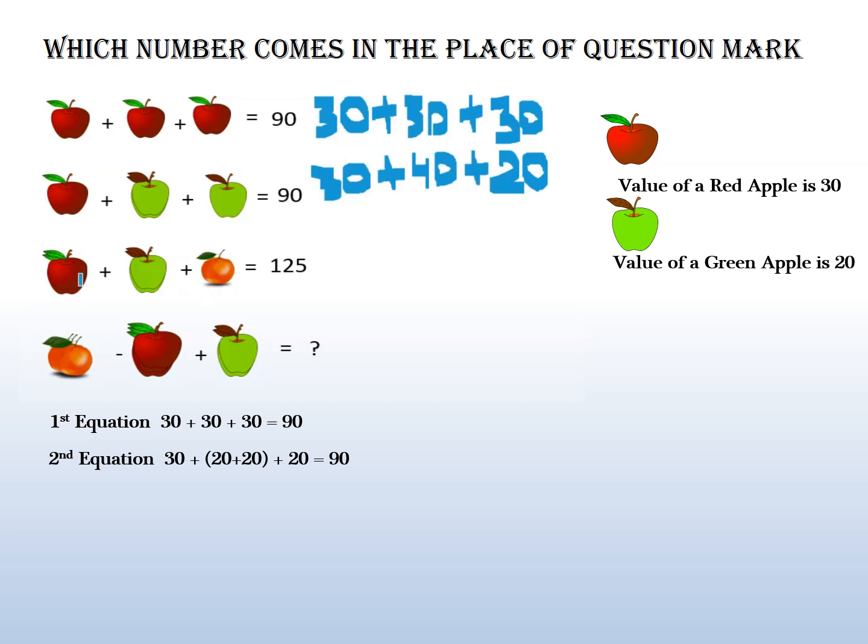Third line: here are 2 red apples, so 30 times 2 is 60. Then you can see 2 green apples, so 2 times 20 is 40. Then the orange.